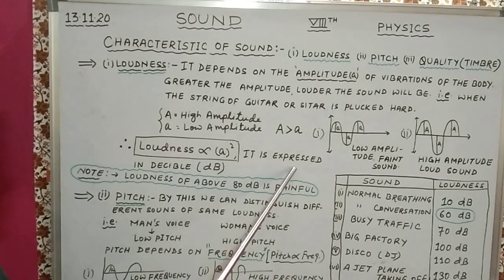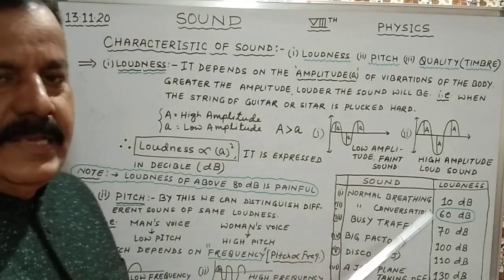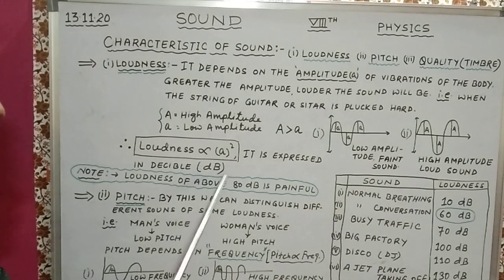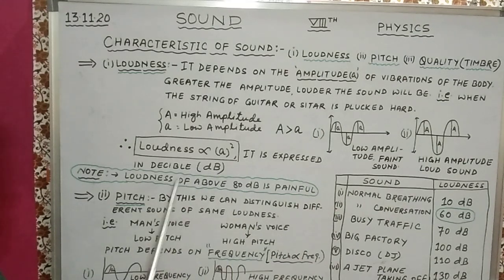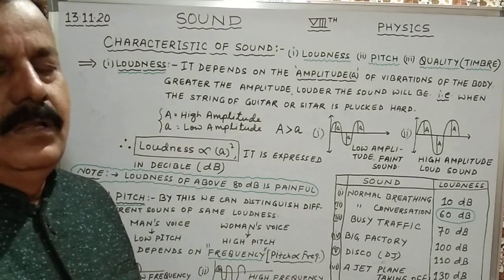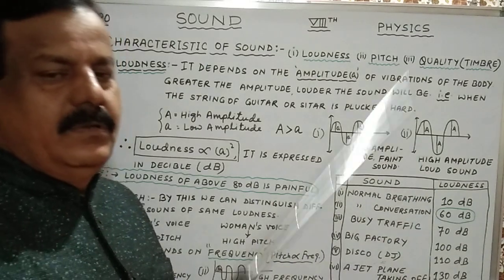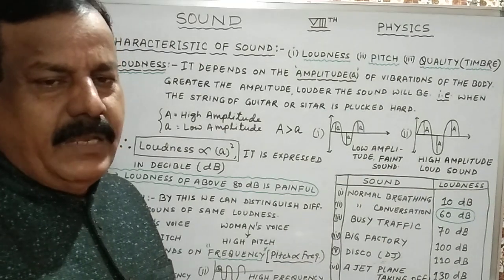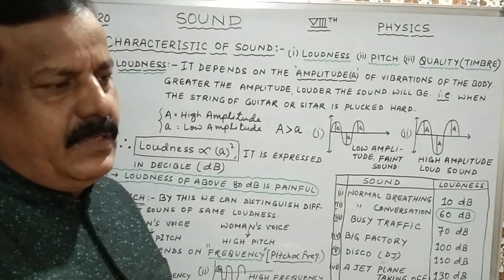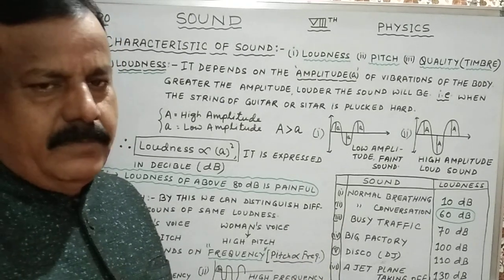Loudness is expressed in decibel — unit symbol dB. An important point: loudness above 80 decibels is painful. It can harm us and damage our auditory system.